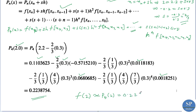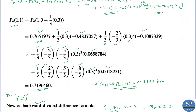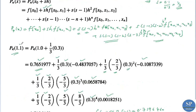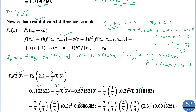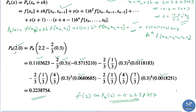So the approximate value of f(2) is p4(2) = 0.2238754. Note that here we replaced x = 1.1 in the forward divided difference formula and x = 2 in the backward divided difference formula. If we do not substitute specific values for x, we obtain the interpolating polynomial in terms of x.